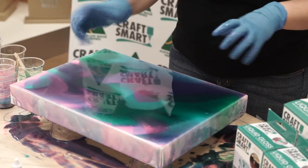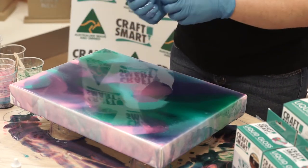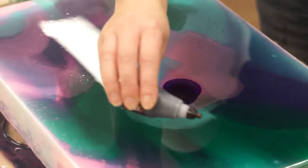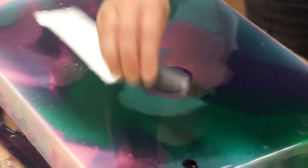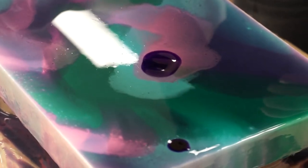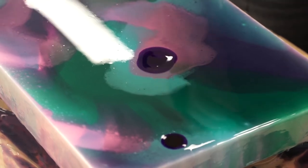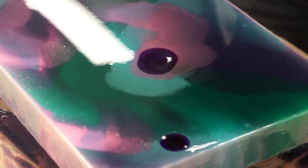What we're going to do is use a butane torch to clear out the air bubbles. First of all, I'm going to use the alcohol ink. This is the Montana Refill Alcohol Ink, and we're just going to pop one or two drops on top of the resin first.